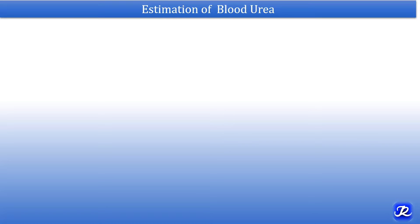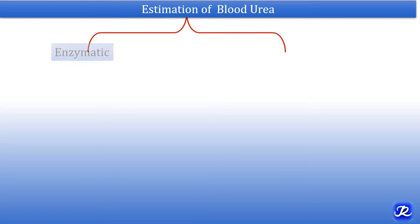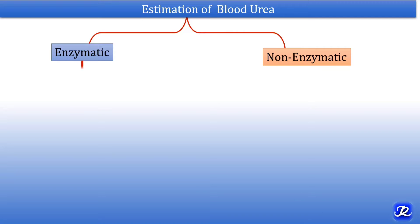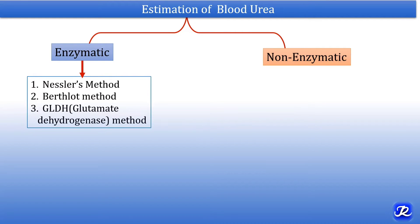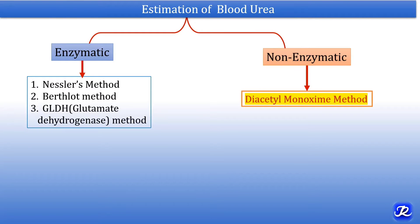Estimation of blood urea is done by two methods: first is the enzymatic method and second is the non-enzymatic method. The enzymatic method uses the enzyme urease, and the various methods are Nessler's method, Berthelot method, and GLDH — glutamate dehydrogenase method. All these enzymatic methods are more specific than the non-enzymatic method. The example of non-enzymatic method is the diacetylmonoxime method, by which today we are going to estimate concentration of urea in the given sample.